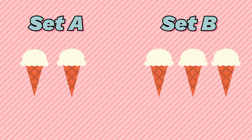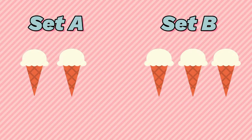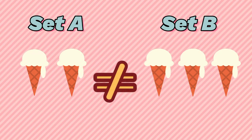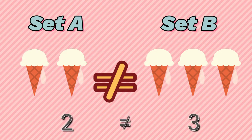Now, if set A and set B have the same objects but different in number, these sets are not equal. You can say that 2 ice creams is not equal to 3 ice creams.